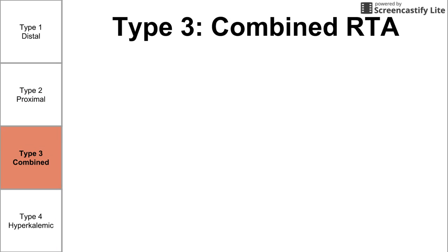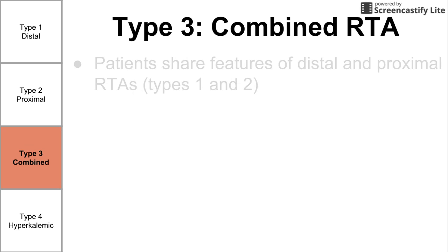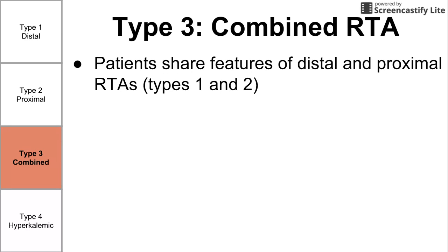Type 3 is a combination of both types 1 and 2. Patients with type 3 usually have features and symptoms of both distal and proximal RTA. This type is relatively rare and rarely discussed.